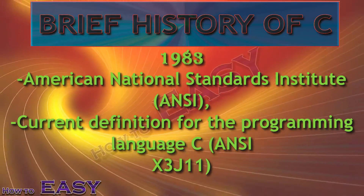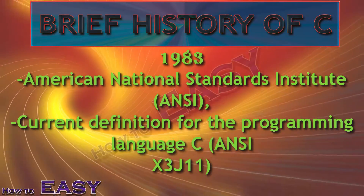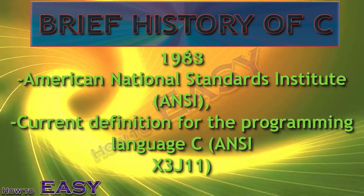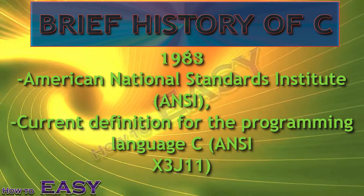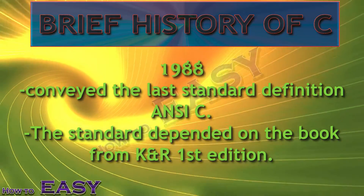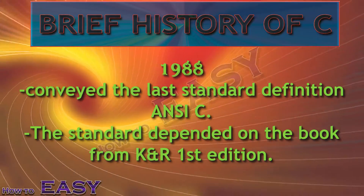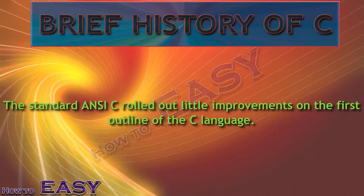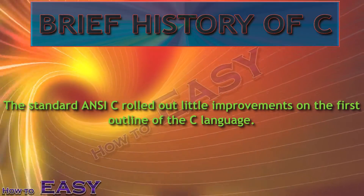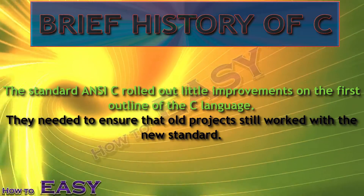In 1983, a committee was formed by the American National Standards Institute, ANSI, to build up a current definition for the programming language C, known as ANSI X3J11. In 1988, they delivered the final standard definition ANSI-C. The standard was based on the book from K&R first edition. The standard ANSI-C made only small changes to the original design of the C language, as they needed to ensure that old programs still worked with the new standard.